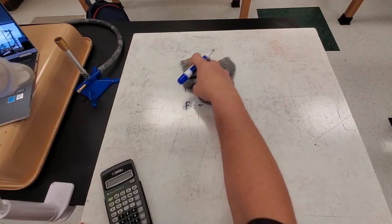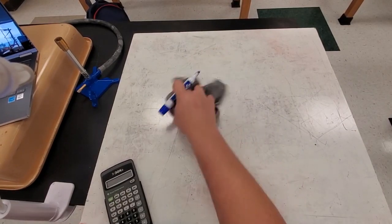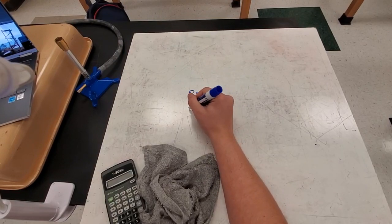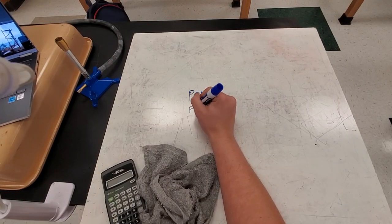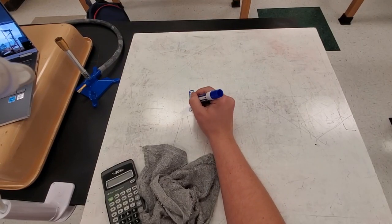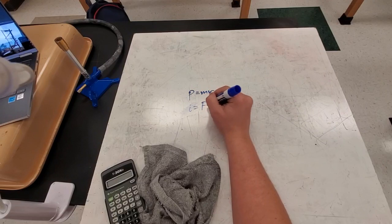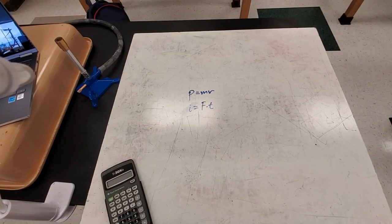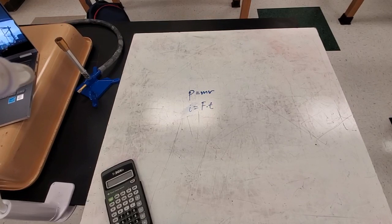So I give you guys some practice problems that deal with both P equals MV and also I equals F times T. We'll write impulse as I is equal to F times T. So try those problems out. Do some work.